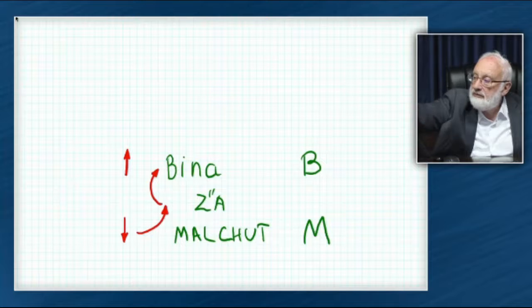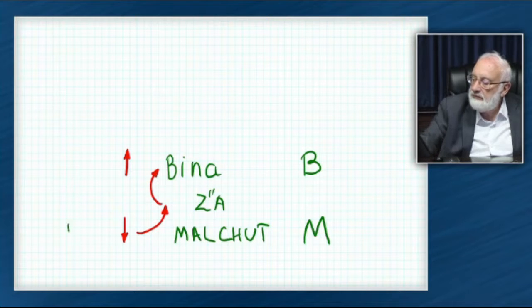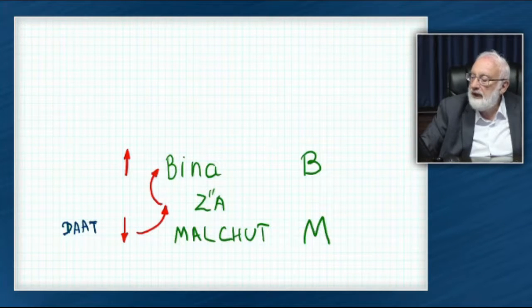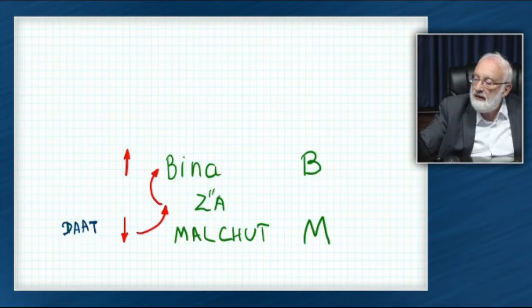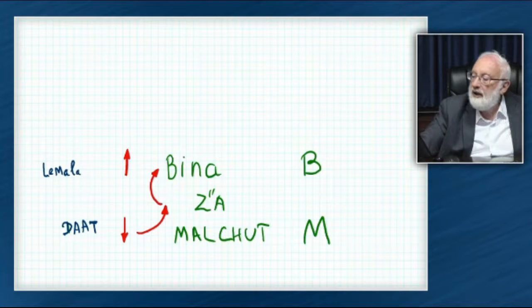What's called da'at in malchut? And what's in bina is called above reason. Meaning within reason is malchut, and bina is above reason.